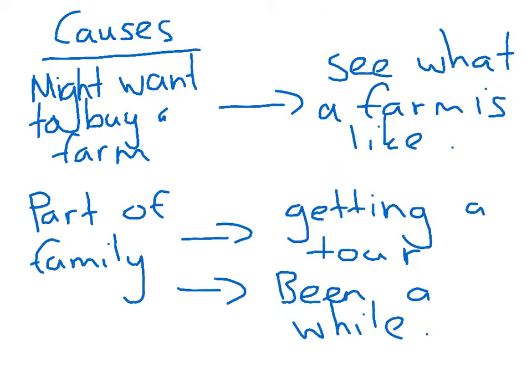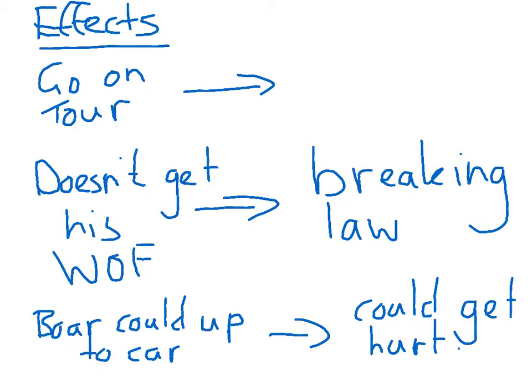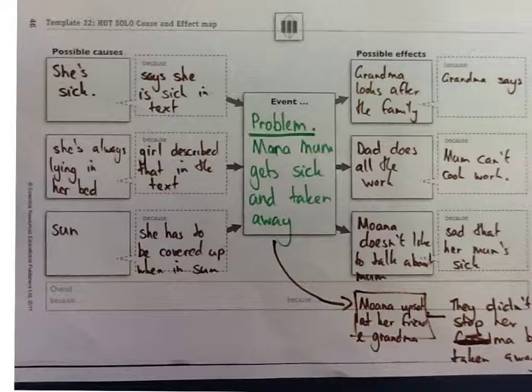That was the first one we did. Now we're going to unpack the next story we read, which was about Moana's mum getting sick and being taken away.